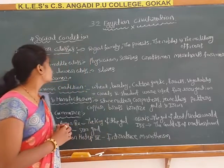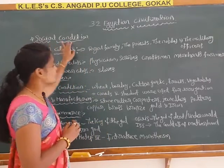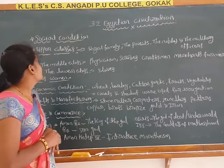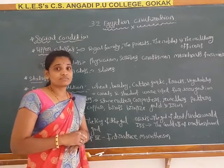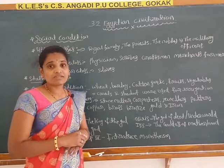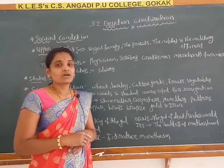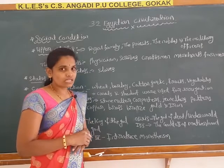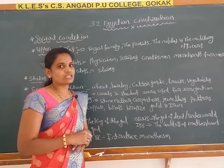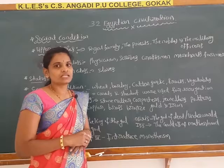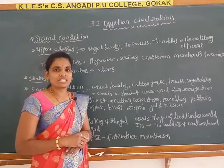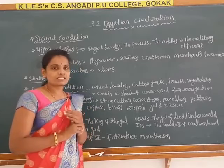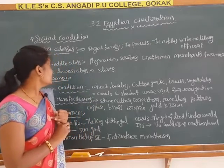Let us go to the social condition. What is the social condition? The Egyptian civilization had an organized society. This society was divided into three classes: the first one, upper classes; middle classes; and lower classes.